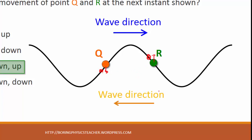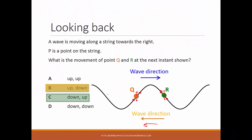However, if the wave direction is towards the left, the neighbor we consider for Q is to its right. In that case Q would move up. For R, the immediate right neighbor is below it, so R would move down. This is how you determine whether a particle in a wave moves up or down, given the direction of the wave.